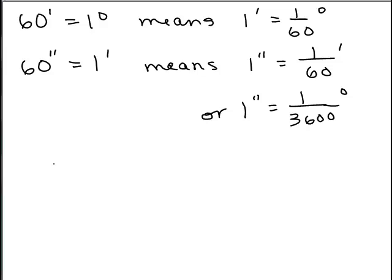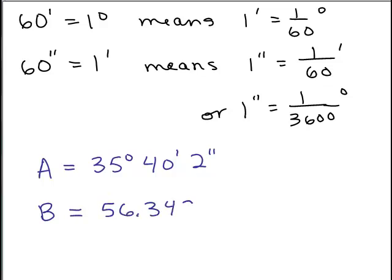So you might see an angle A. Now, I'm just using A instead of writing the measure of angle A. You might see some angle A written as, let's say, 35 degrees, 40 minutes, and 2 seconds. But you might see an angle written like this, 56.3481 degrees.